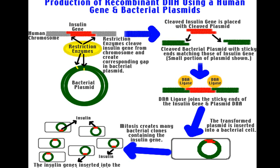This insulin gene has to be inserted into the bacterial plasmid DNA. Once you identify the human chromosome containing the insulin gene, you fragment that chromosome — this fragmentation is done with restriction enzymes. The same restriction enzyme is used for the bacterial plasmid and for the human DNA to separate the insulin gene.